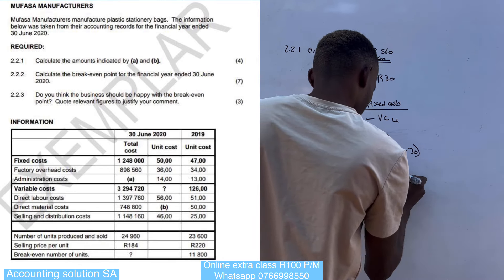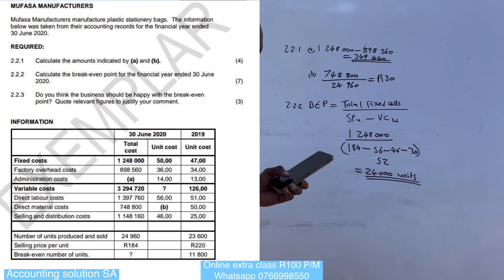The break-even point is 24 000 units — this is the point where we make no profit and no loss. The follow-up question asks: do you think the business should be happy with the break-even point? Quote the relevant figures to support your answer.